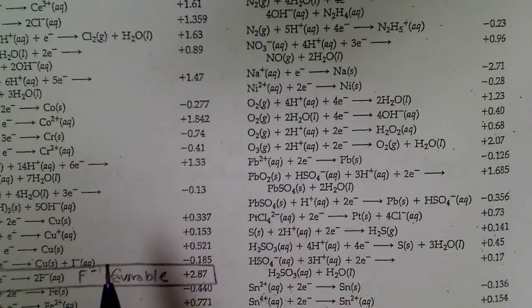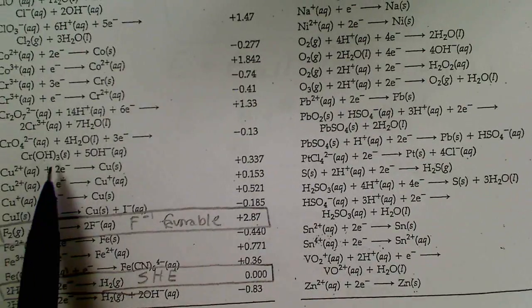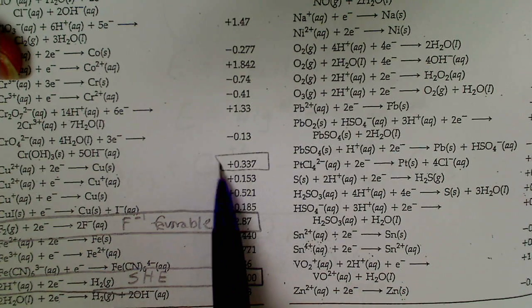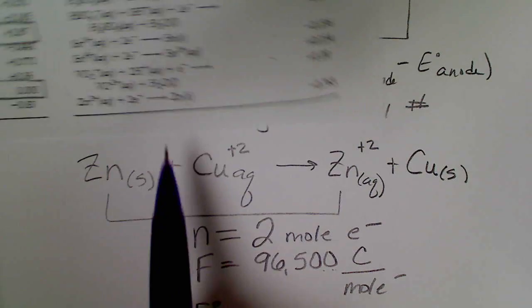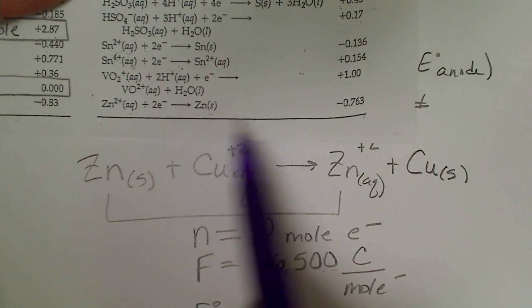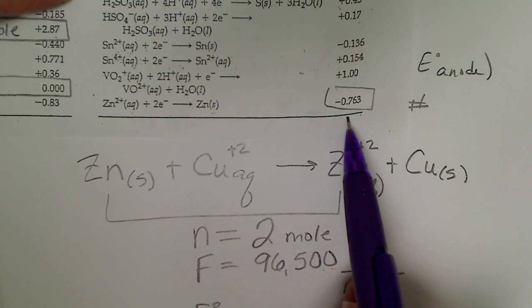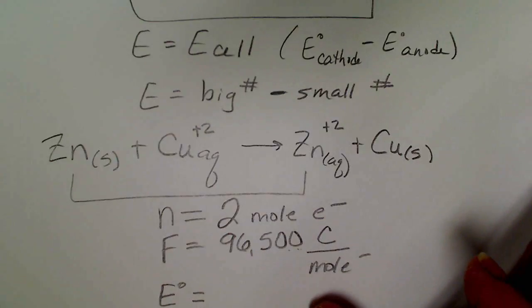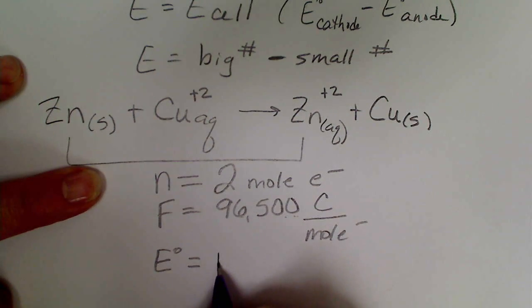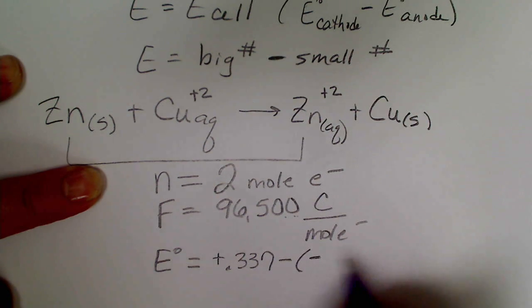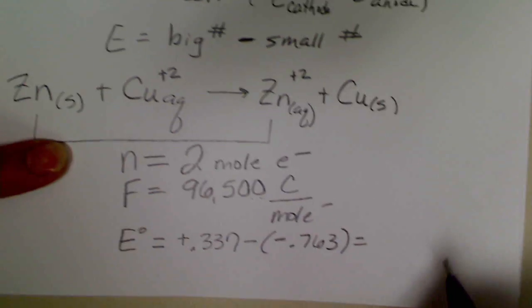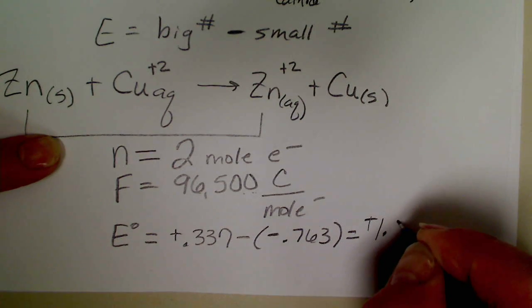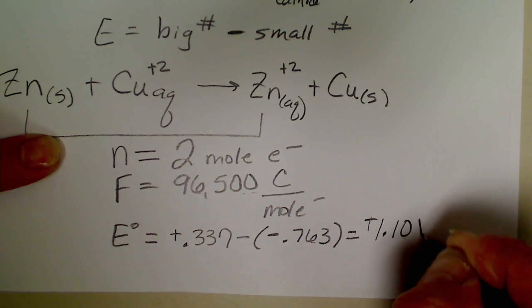In this balanced equation it's easy to see by looking that the number of electrons is 2, so n is 2 moles of electrons. Faraday's constant is 96,500, which we're rounding. This is coulombs per mole of electrons. Then the E cell for this would be the value obtained from the standard reduction potentials table.